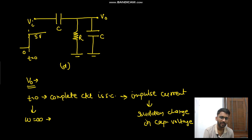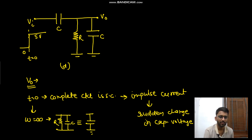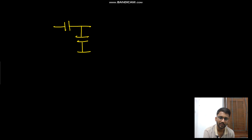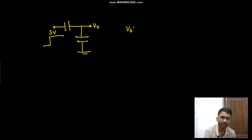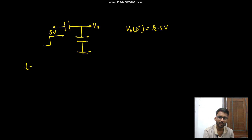At t equals to zero we have infinite frequency content, and because of that the parallel combination of RC can simply be replaced by a capacitor. So at t equals to zero we will have this circuit — this is C, this is also C, this is v0, and this is 5 volt. So your v0 at t equals to zero-plus would be 2.5 volt.